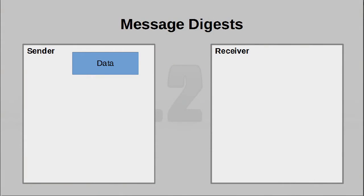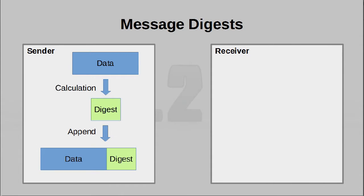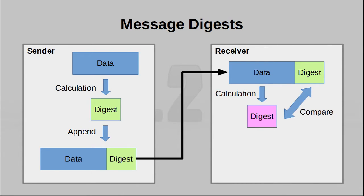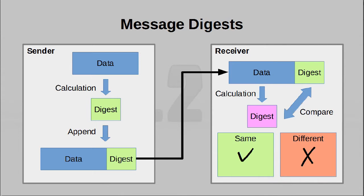Technique number three is to use a digest. Let's say you want to send a packet of data. What you can do is perform some computation on that packet of data to generate what is known as a digest. There are many different ways you can do this. But the idea is, when the receiver actually gets the information, they will get both the data as well as the digest. What the receiving end then needs to do is compute the digest again based on the data it has received. If the digest that has been computed is the same as the digest that has been received, you get the assurance that whatever you have received is correct.